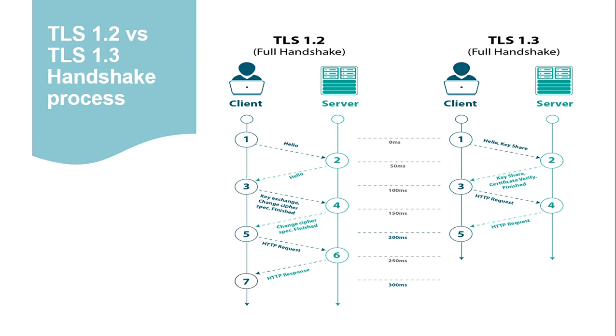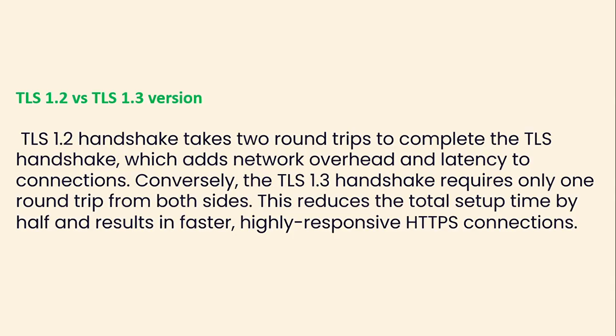The handshake time and number of steps are reduced in TLS 1.3. TLS 1.2 handshake takes two round trips to complete, which adds network overhead and latency. Conversely, the TLS 1.3 handshake requires only one round trip from both sides. This reduces the total setup time by half and results in faster, highly responsive HTTPS connections.